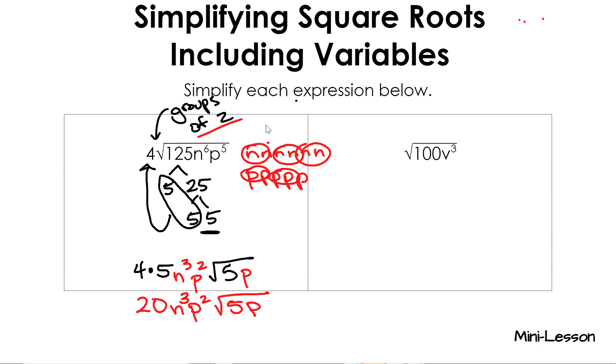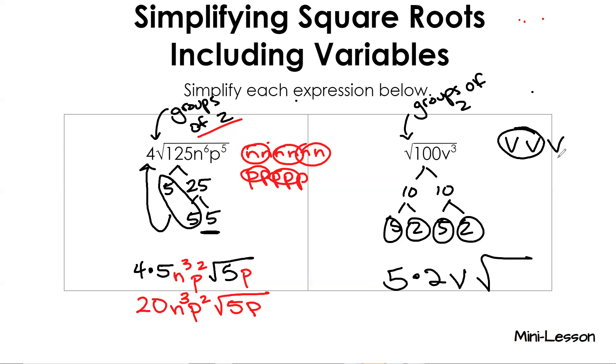So looking at the next one, we're going to do our numbers first. So what can we divide 100 by? 10. So 100 divided by 10 is 10. And then what can I divide 10 by? 5. So I get 5 and 2, and 5 and 2. Now remember, we want to make groups of 2 because of this little number in the cubbyhole. So we're going to pull out 5, and we're going to pull out 2. We have 3 v's, and we want to make a group of 2. So here's my group of 2. It's going to be a v on the outside, and then we're left with a v on the inside. So when we simplify, we're going to get 10v square root of v.